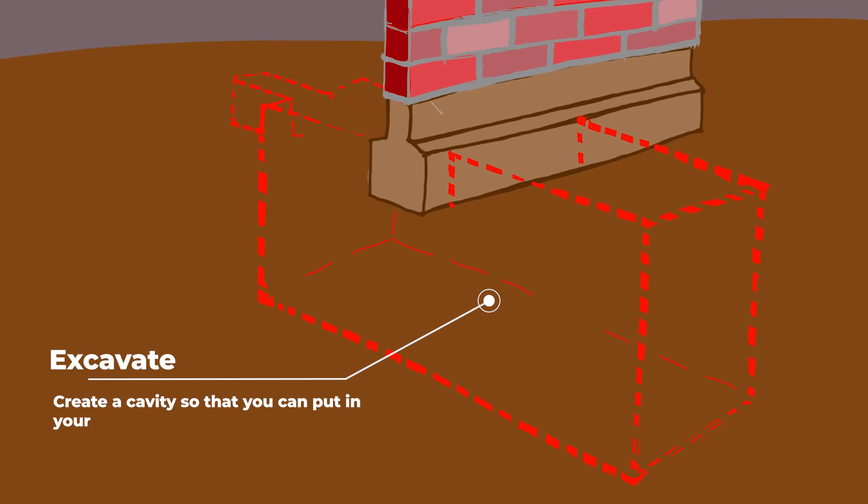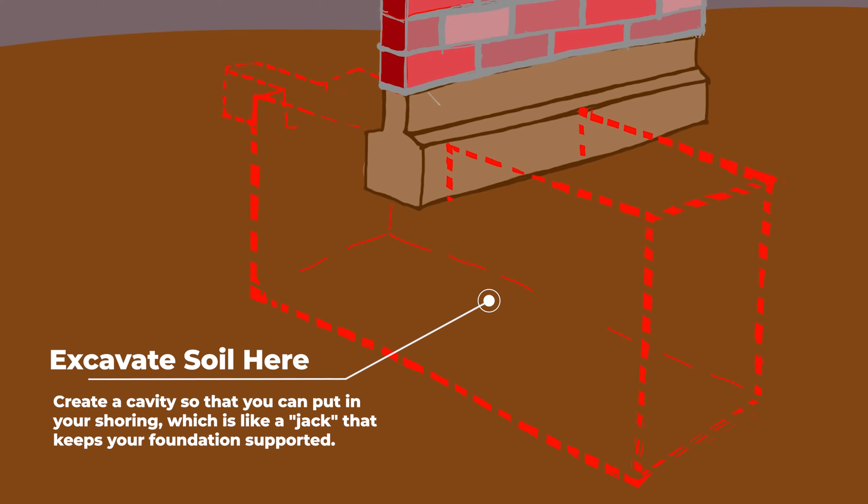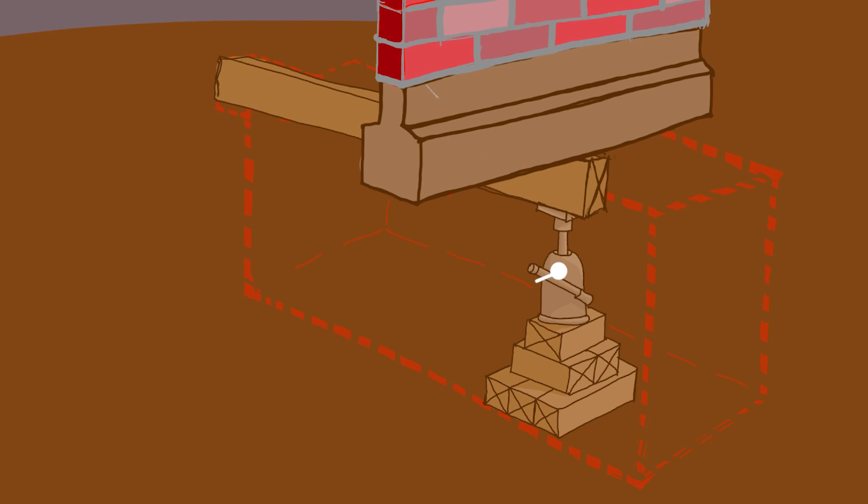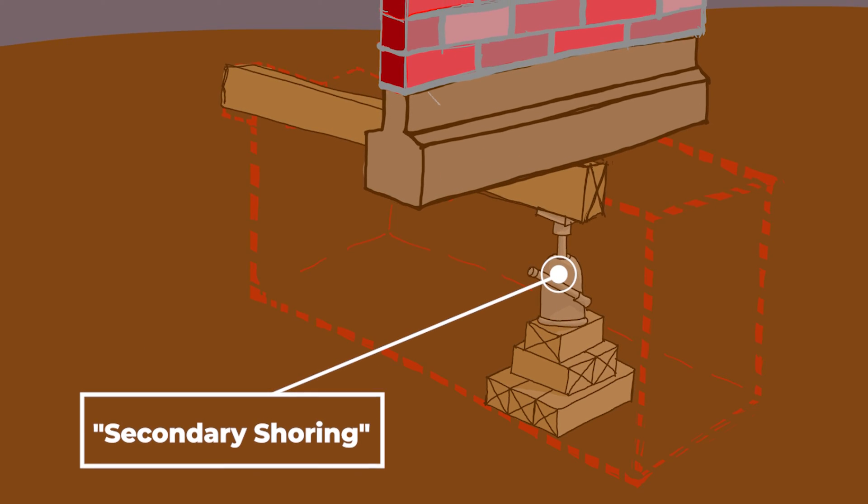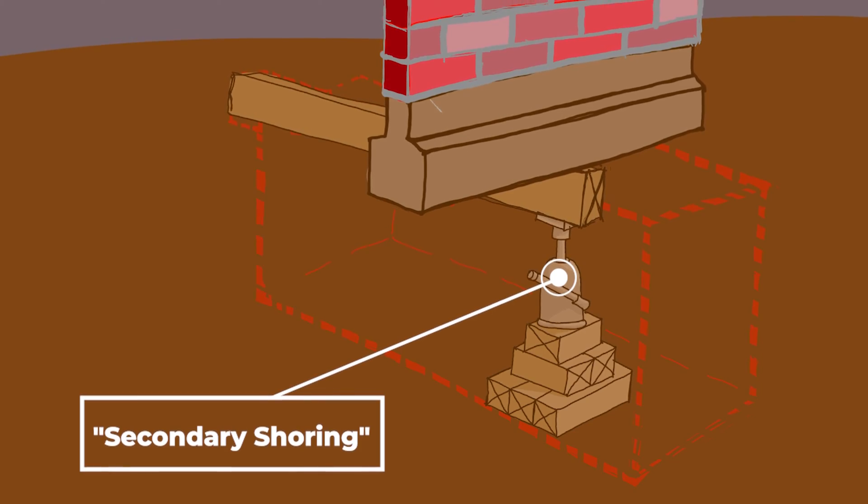Before excavating under any foundation, always make sure that the secondary shoring is put in place. Shoring is a temporary structural frame that transfers loads away from the building, especially the areas that you will be working under, to areas that are not being excavated.